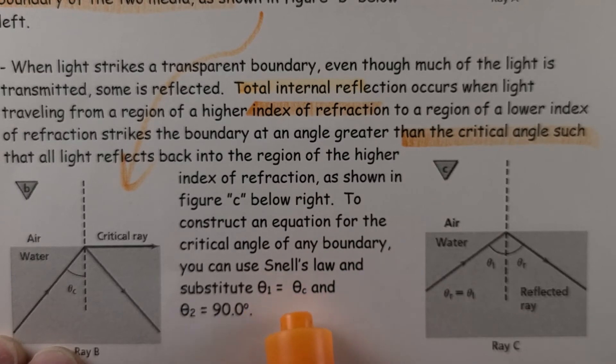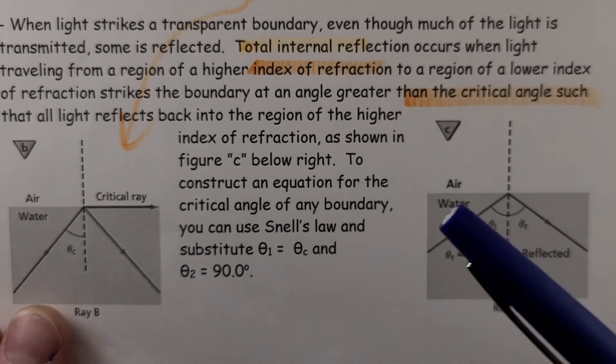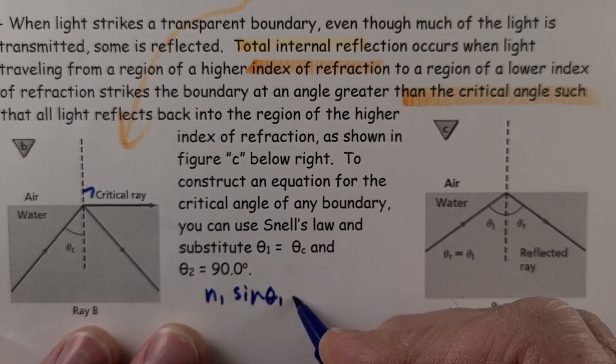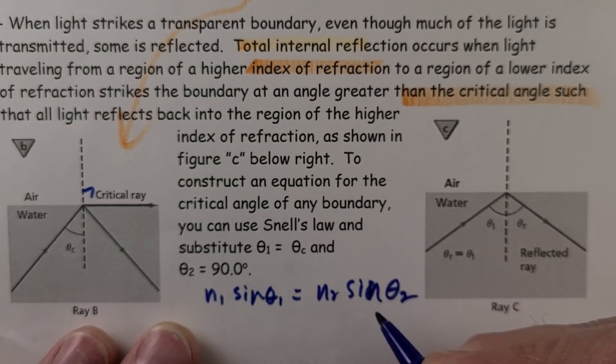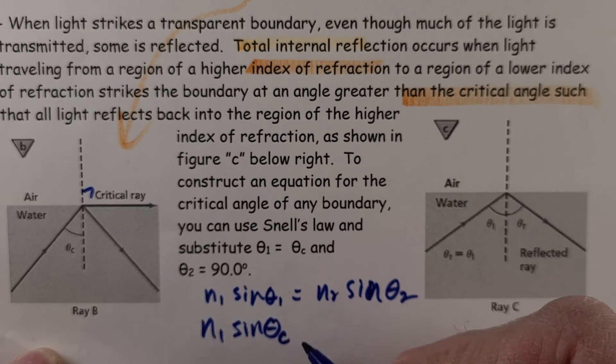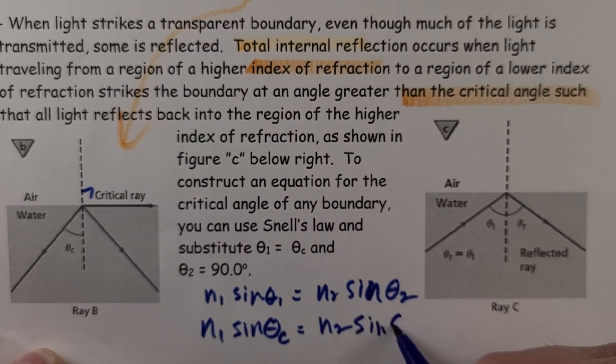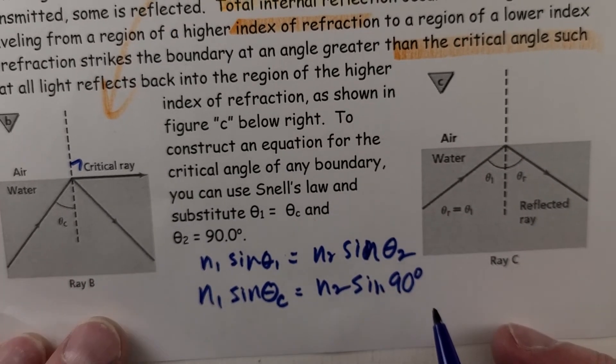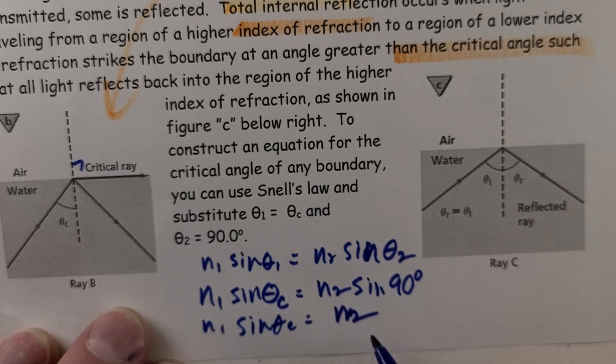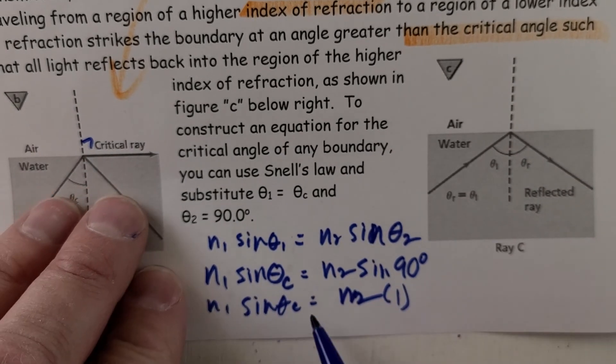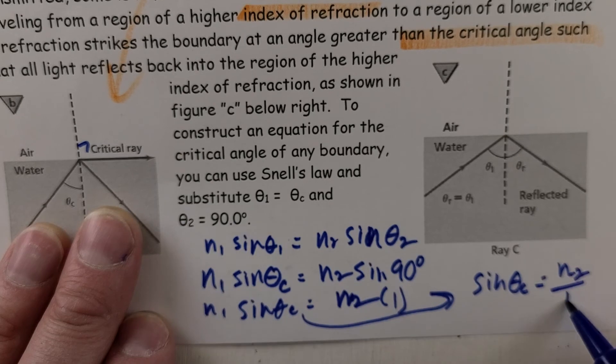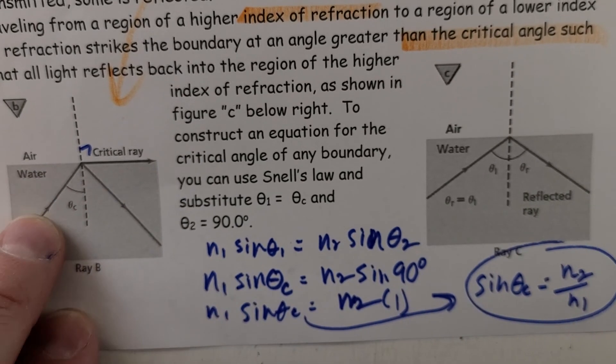To construct an equation for the critical angle of any boundary, you can use Snell's law and substitute theta of one, which is theta C, and the refracted angle as 90. So if I had N1 sine theta one equals N2 sine theta two, and if I know that this angle here, my incoming angle, it's going to be an interesting angle, theta C, going into my second medium. Now sine of 90 equals one. So I have N2 multiplied by one. Sine theta C is equal to, well divide each side by N1, and I get N2 over N1 equals sine theta C. And if you turn to the next page, you'll see that's what we have.